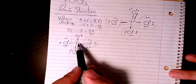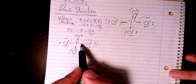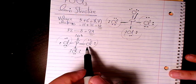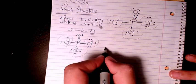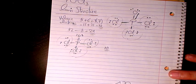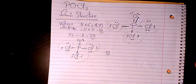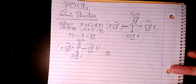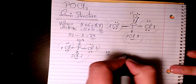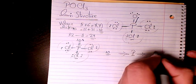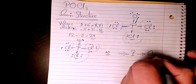Now the octet rule is satisfied for chlorine and also for oxygen because we have two, four, six, and eight. But for phosphorus, as you can see, we have ten electrons — five bonds times two equals ten. Sometimes there are special cases where central atoms don't obey the octet rule; sometimes they are underfilled, sometimes overfilled. In this case phosphorus has ten electrons, so that's called overfilled.